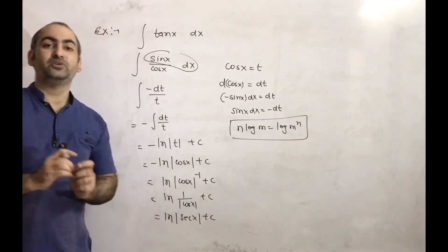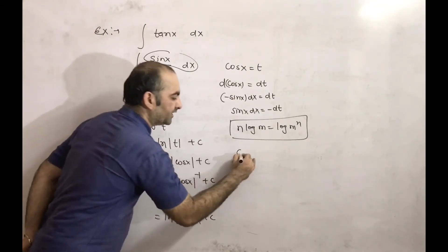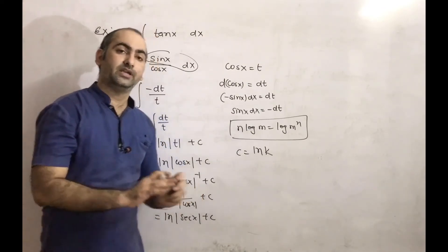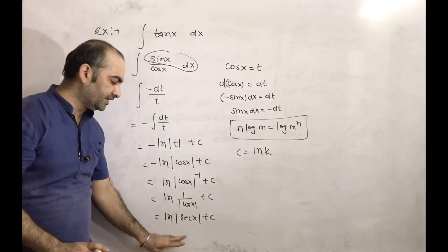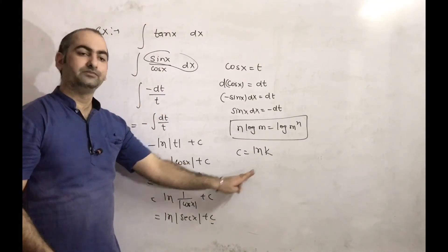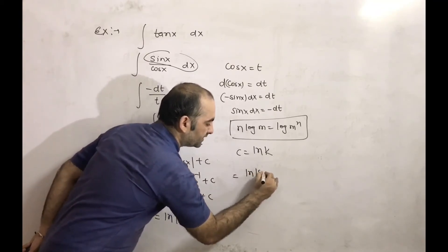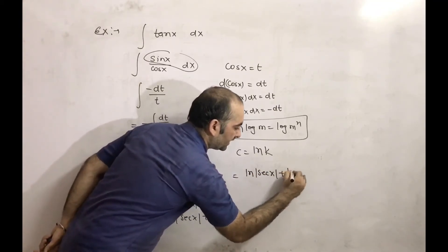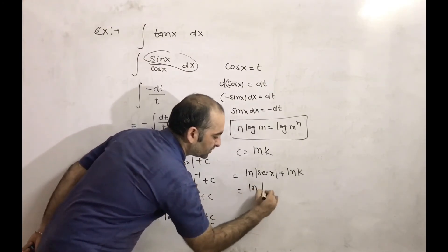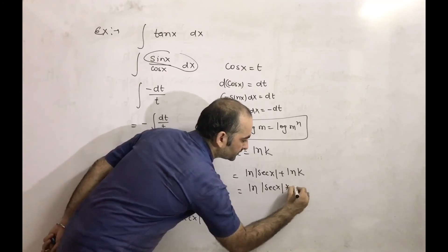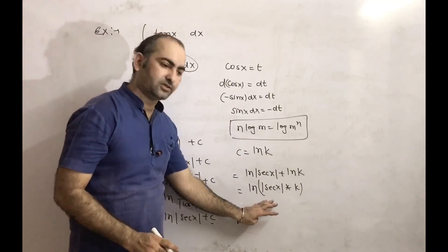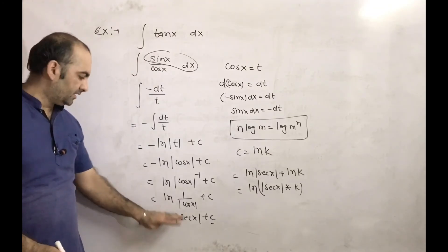Instead of c we can put ln k, since c is a constant and ln k is also a constant. So writing ln k instead of c gives ln|sec x| + ln k, which we can combine as ln|sec x · k|. Both forms are correct.